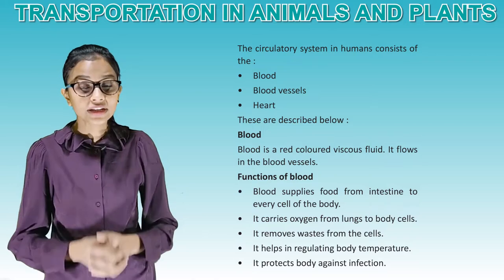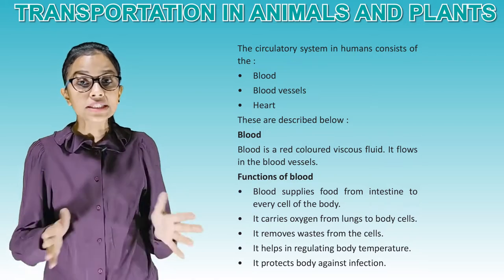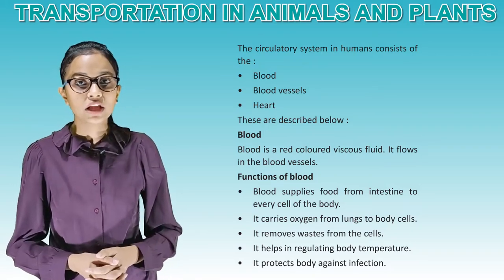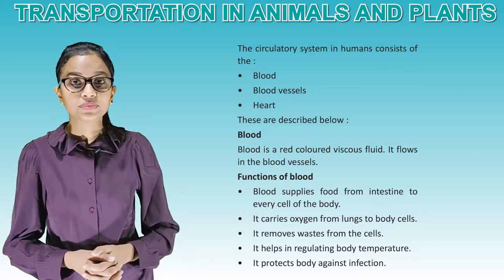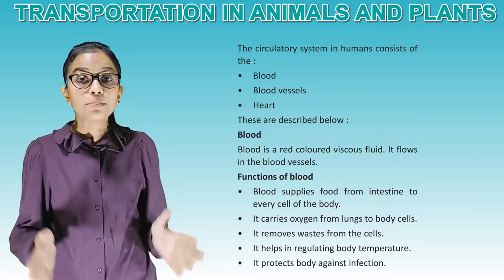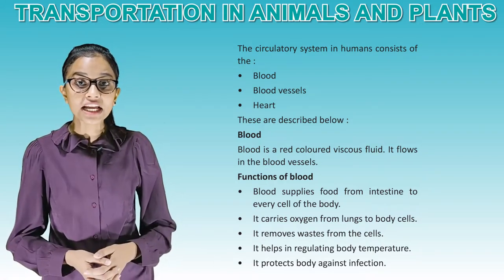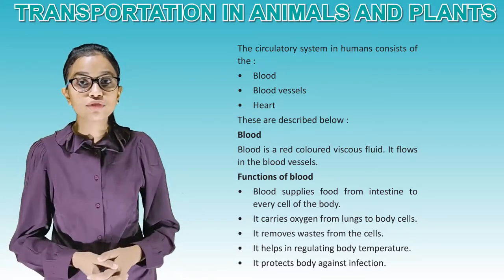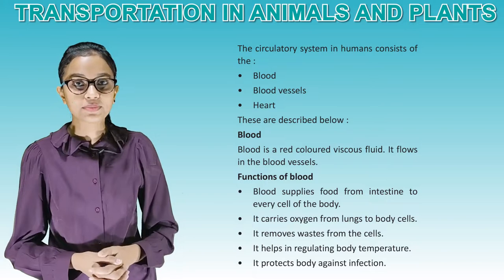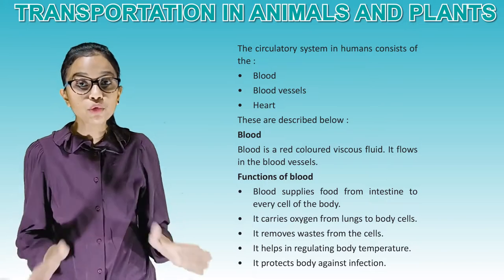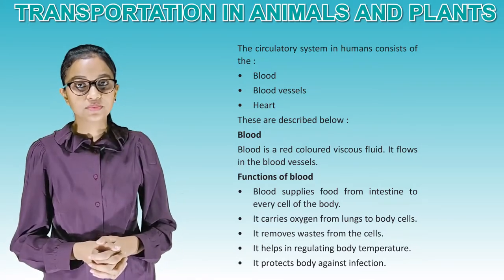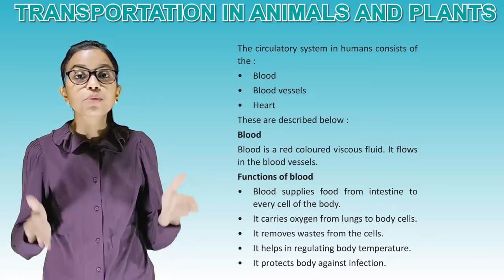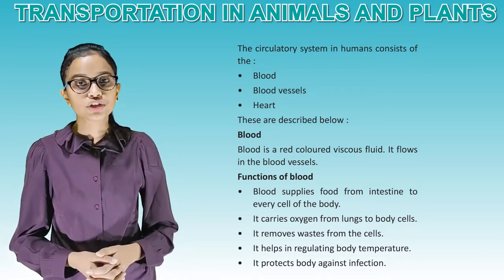Blood is a red colored viscous fluid. It flows in the blood vessels. Functions of blood: blood supplies food from the intestine to every cell of the body. It carries oxygen from lungs to body cells. It removes wastes from the cells. It helps in regulating body temperature. It protects body against infection.